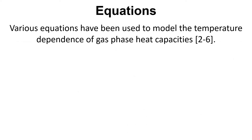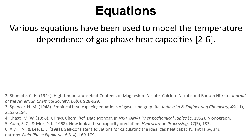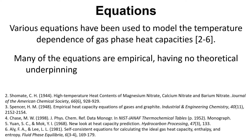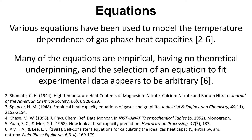Various equations have been proposed and used to model the temperature dependence of gas phase heat capacities, and here are some of the references to the different examples of these equations. Now many of these equations are empirical, meaning that they've got no theoretical underpinning to them. Also, the selection of the equation used to fit experimental data appears to be arbitrary — there don't appear to be any rules around which equation should be selected for a certain situation.